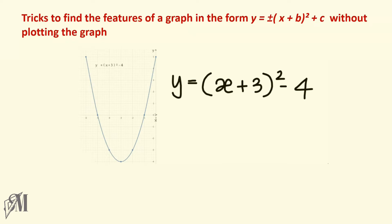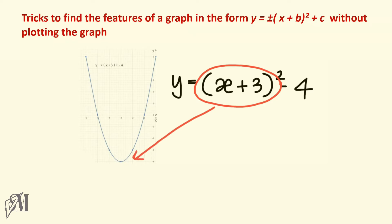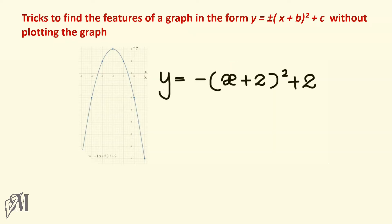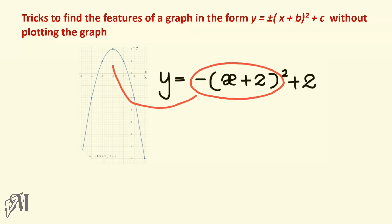Look at this equation — here the square term is positive, therefore the graph attains a minimum. But in this example, the square term is negative, so the graph attains a maximum.